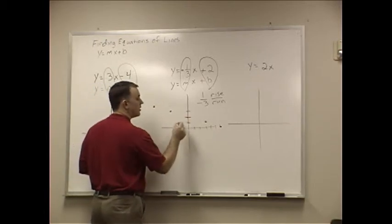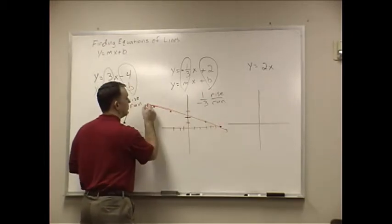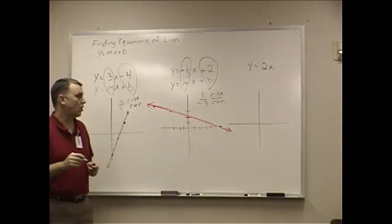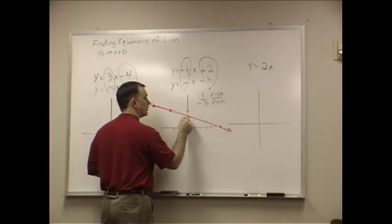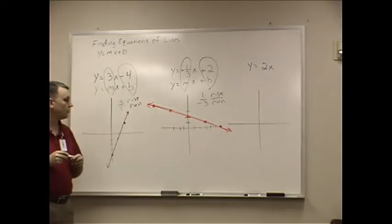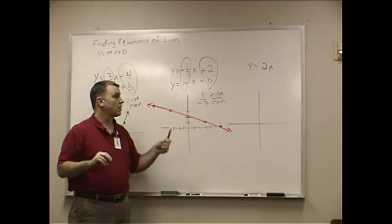And you can see that if I had done that, the line, it helps if I can draw a straight line, will go right through all of those points. Make them nice and large here so you can see them all. So you can assign the negative to the top number or to the bottom number. It doesn't matter. The last one here is y equals 2x.